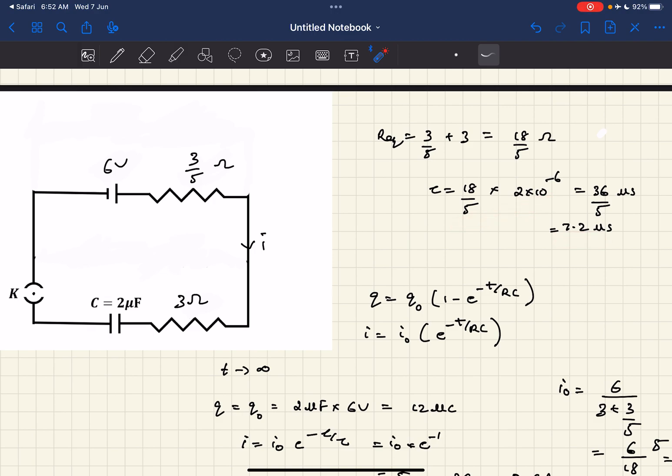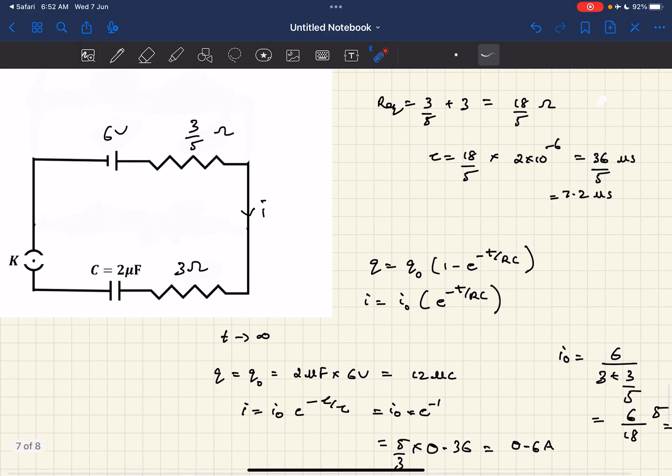For option C, they're asking what is the current in the capacitor just after 7.2 microseconds after the key is closed, which means after tau seconds. You need to know these two formulas: charge as a function of time for a charging RC circuit, and if you differentiate it, you get current as a function of time.